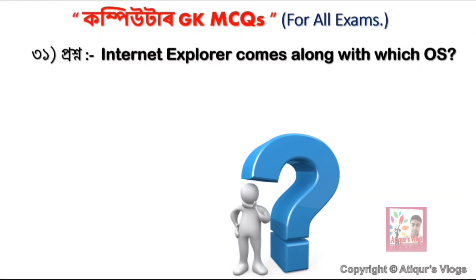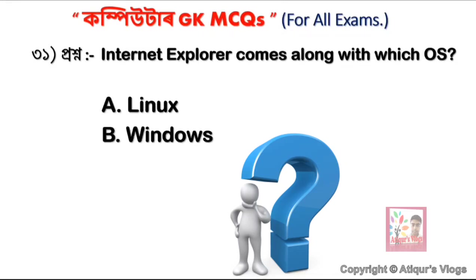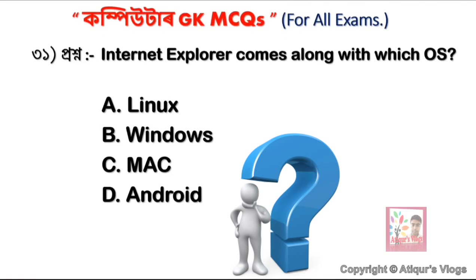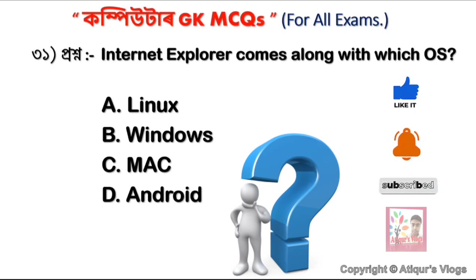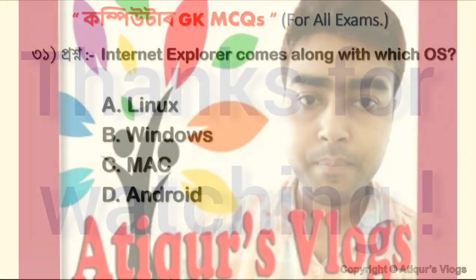Internet Explorer comes along with which OS? Internet Explorer is the default browser for a specific operating system. Option A is Linux, option B is Windows, option C is Mac, and option D is Android. The correct answer is Windows — Internet Explorer is bundled with the Windows operating system.